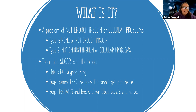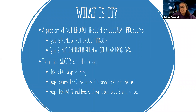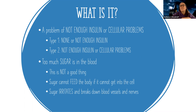Sugar cannot feed the body if it cannot get into the cell. My glucose needs to be inside my cell, but if there's no insulin to unlock that door, or if the cells are saying no, then I can't get energy into my cells to feed my body. And there's all this extra sugar going around in the bloodstream causing damage everywhere, because it's very irritating to blood vessels and nerves, and it can cause a host of problems.